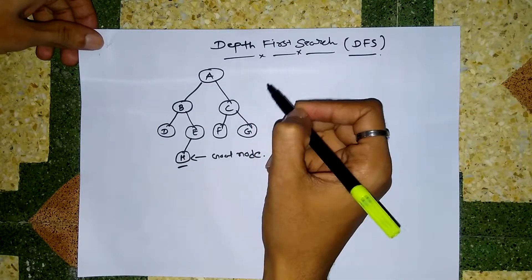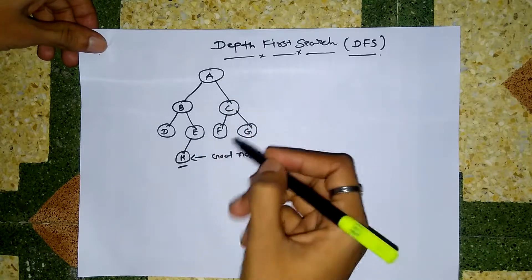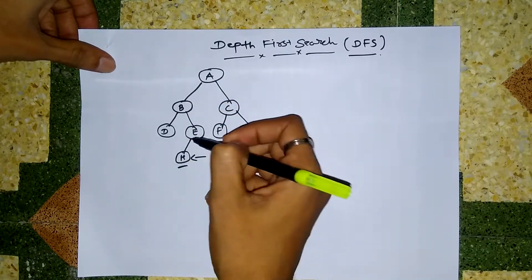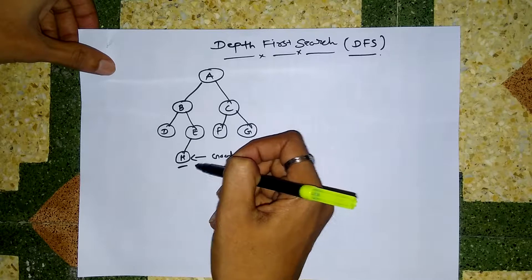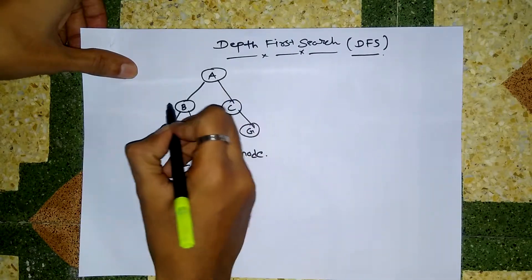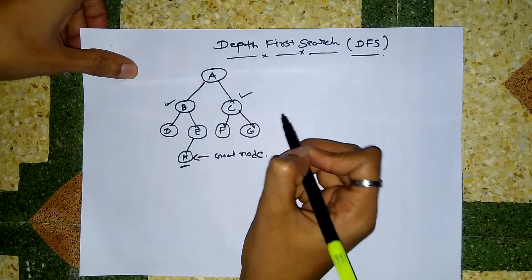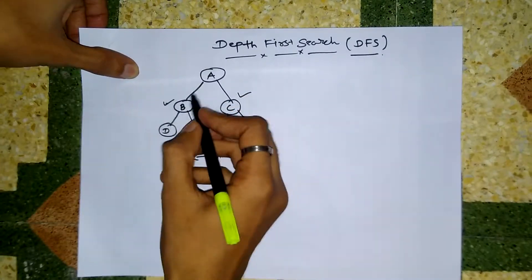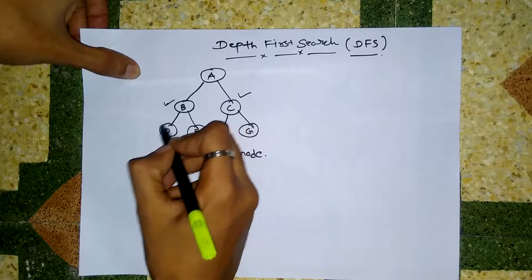Then DFS tries to search the goal node in a particular branch until the goal node is not found. So first of all it will expand these two successors of the root node, and then it will search in this branch only and try to find the goal node.